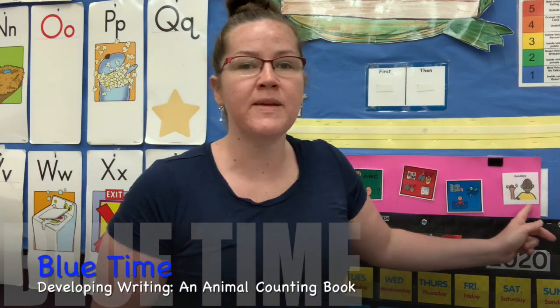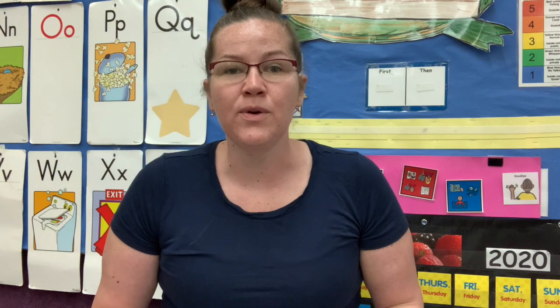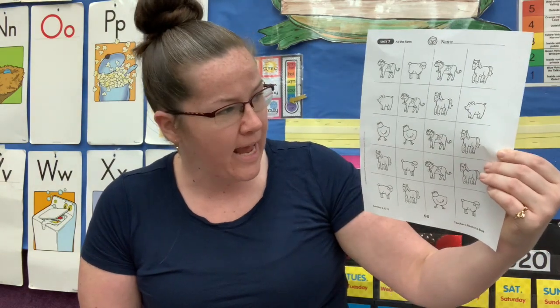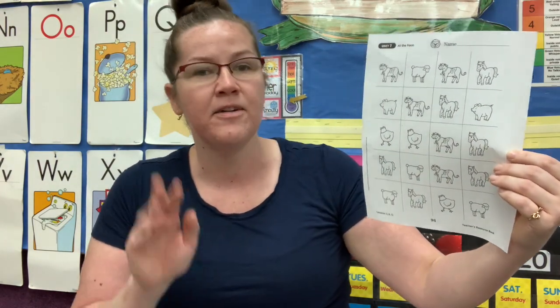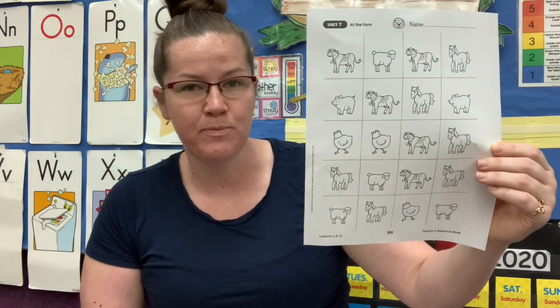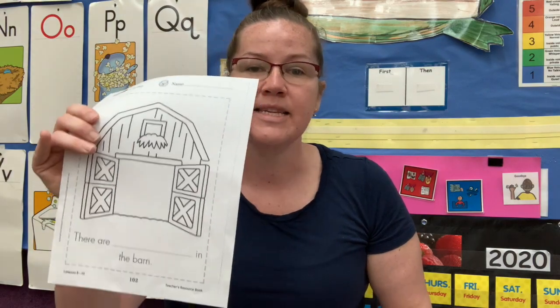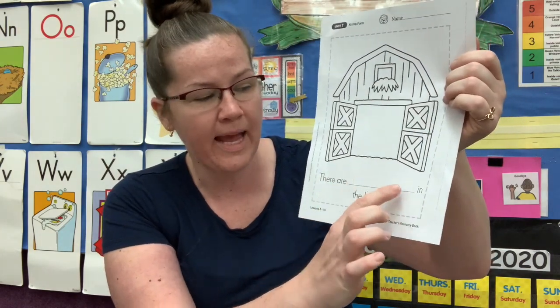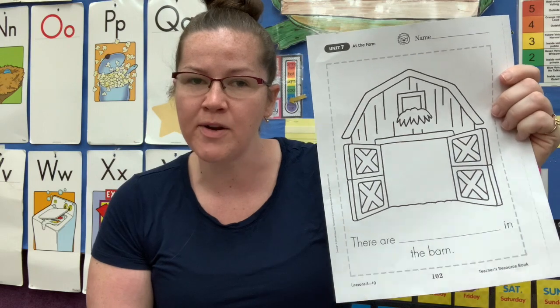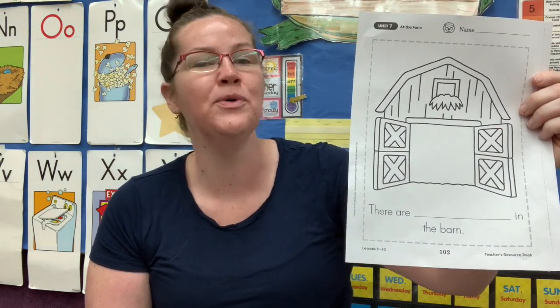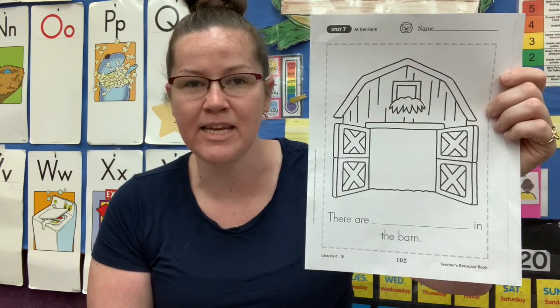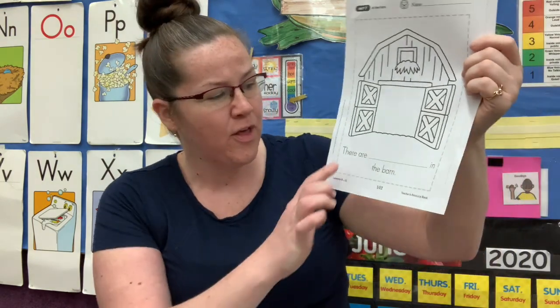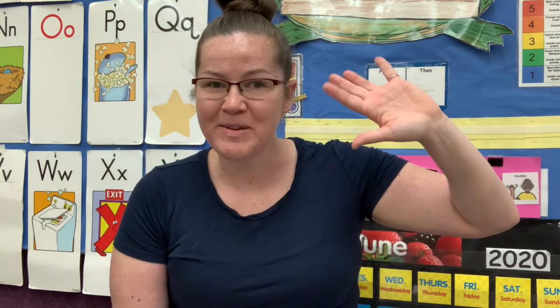It's blue time, which means it's almost time to say goodbye. Today for blue you guys are going to draw another picture of a barn and cut five cows from the paper and glue them into your barn. Save this because tomorrow we're going to put our book together. On the bottom it says 'there are blank in the barn.' What are you guys putting in the barn? Cows! What do cows say? Moo! And how many cows? That's right — five. There are five cows in the barn. Bye friends, see you tomorrow!